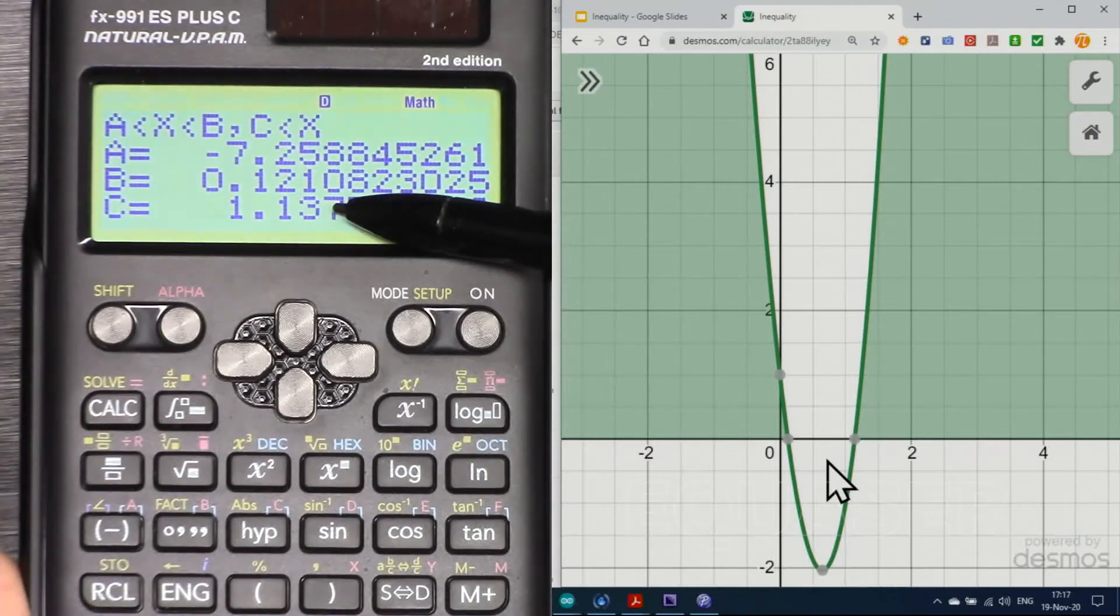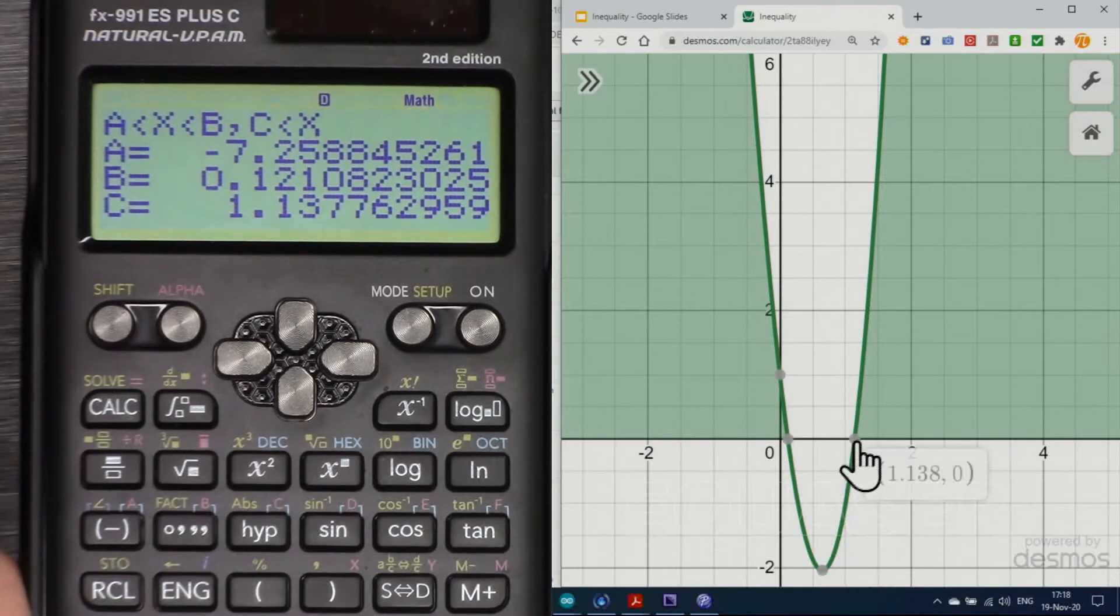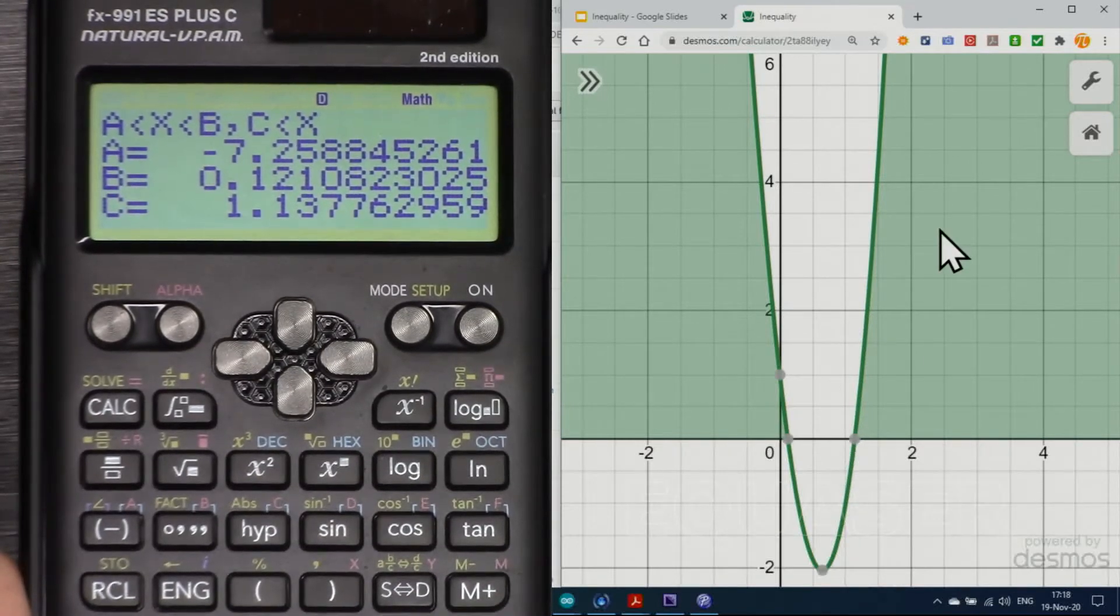And then c, then this area is below the 0, so we are not concerned. And then for c, -1.1, so x is greater than 1.13. When x is greater than 1.138, then y is greater than 0.